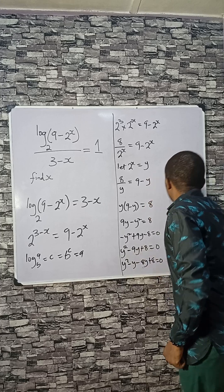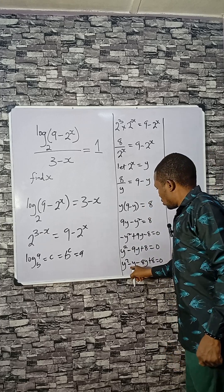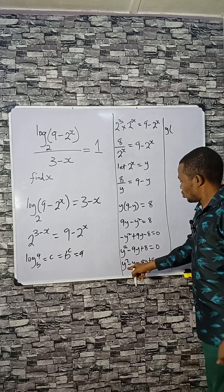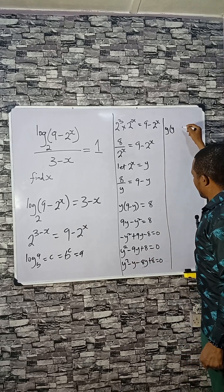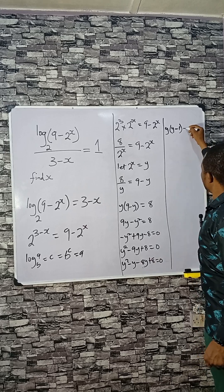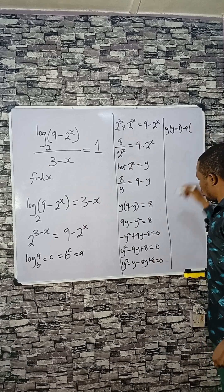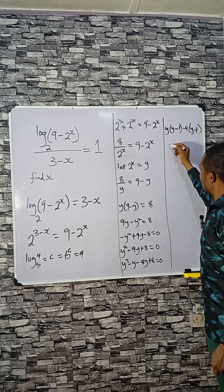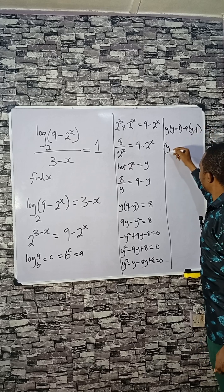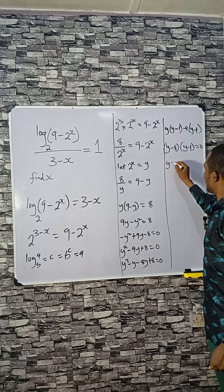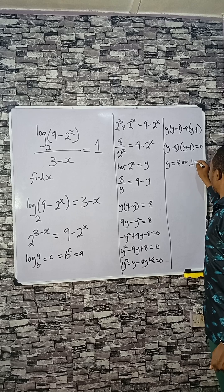By factoring, grouping gives y minus 8 times y minus 1 equals 0. So y minus 8 equals 0 or y minus 1 equals 0, giving y equals 8 or y equals 1.